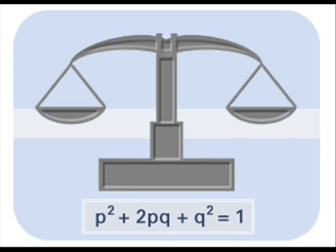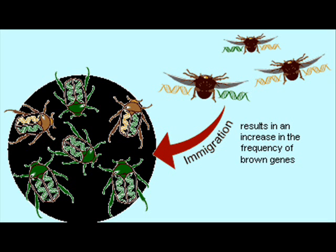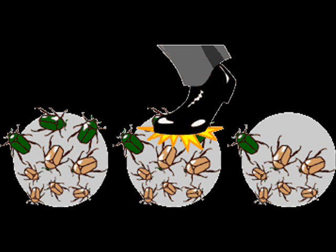Five conditions must be met for a population to remain in Hardy-Weinberg equilibrium: extremely large population size, no gene flow, no mutations, random mating, and no natural selection. Gene flow is the transfer of alleles into or out of populations. Another phenomenon that affects allele frequencies is genetic drift — when chance events cause allele frequencies to shift. There are two different examples of genetic drift: the founder effect and the bottleneck effect.